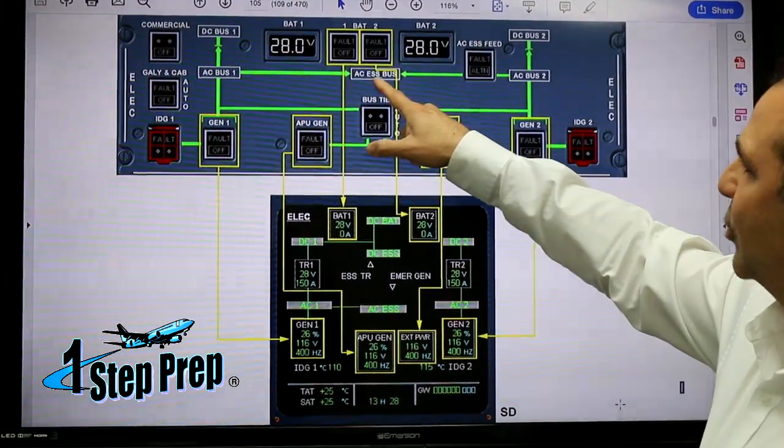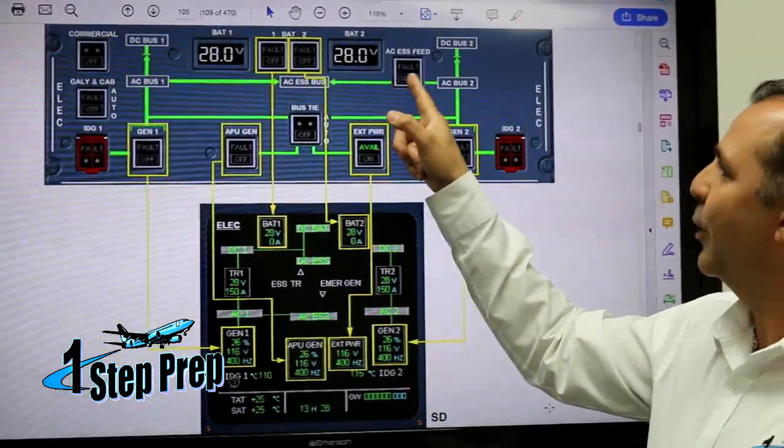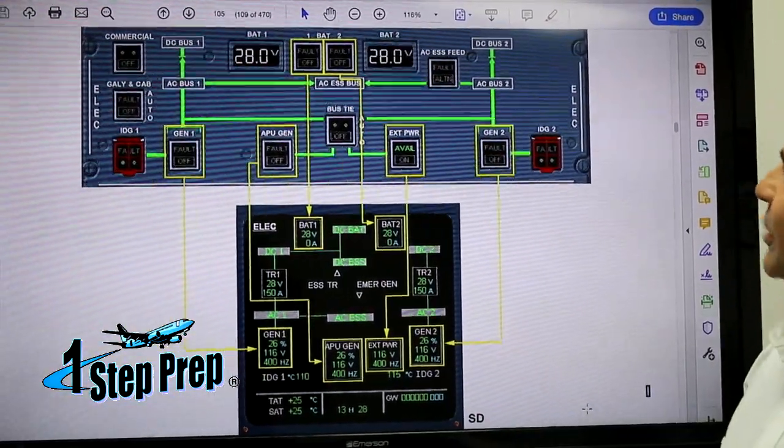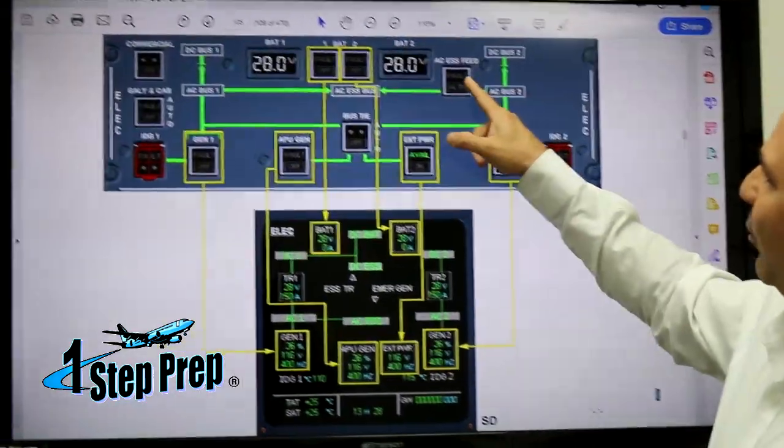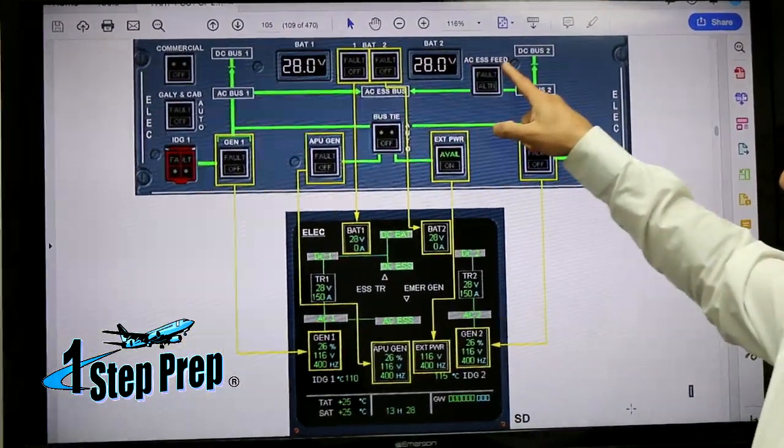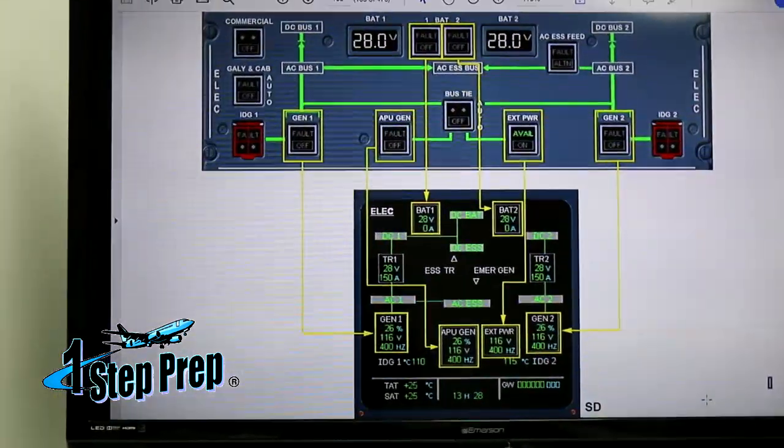When AC Essential Bus is not powered, the fault light is going to come on on AC Essential Feed. The fault light tells us that AC Essential Bus is not powered.